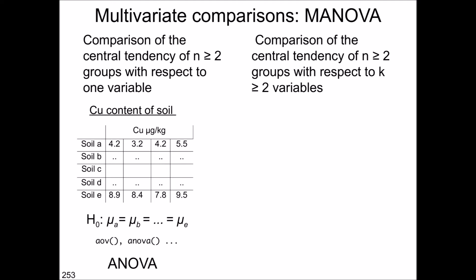Now let's turn to the multivariate ANOVA, so the MANOVA. To understand the background, we start again with the univariate case — the comparison of the central tendency of two or more groups with respect to one variable. In this case, we have measured the copper content in different soils, and the hypothesis is that the copper concentrations are the same in all soils, or more abstractly that mu A, mu B, and so on until mu E are the same. We have discussed more background of this in the context of the univariate part of the course.